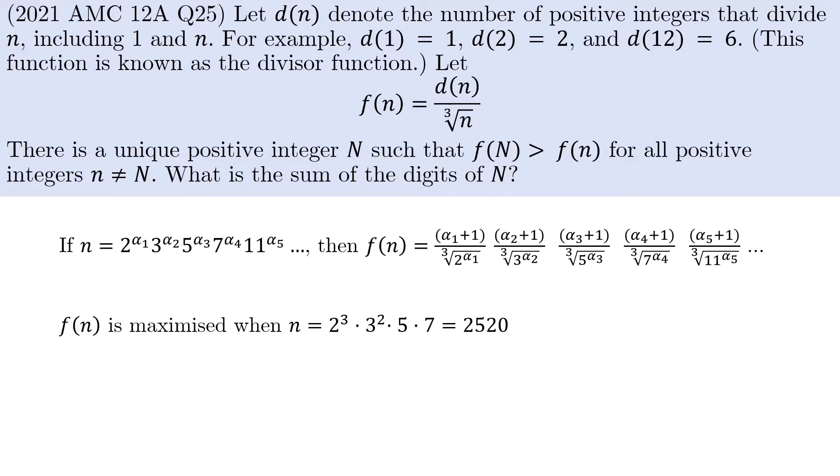Putting all this together, we see that f(n) is maximized when n equals 2520, which has 9 as its sum of digits. So what do you think of this problem as problem 25 of the AMC? Stay tuned for coverage of more competitions in the coming months. And see you soon.